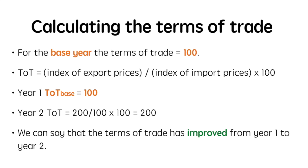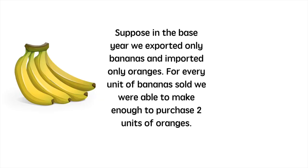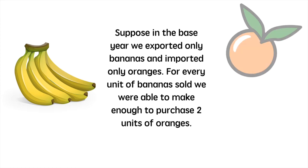We can say that the terms of trade has improved from year 1 to year 2. Suppose we exported only bananas and imported only oranges. In the base year, for every unit of bananas sold, we were able to earn enough to purchase 2 units of oranges. This will be our starting point for comparison.